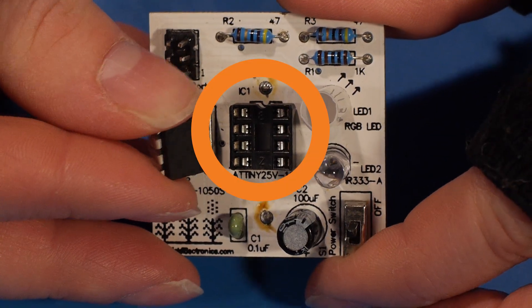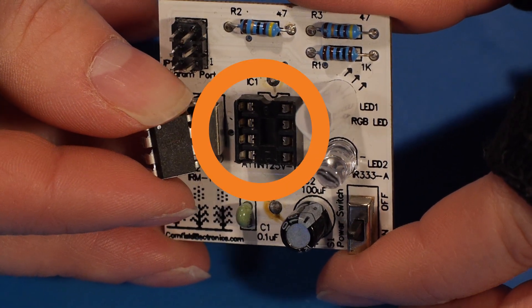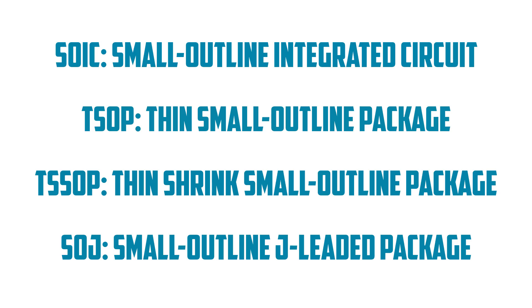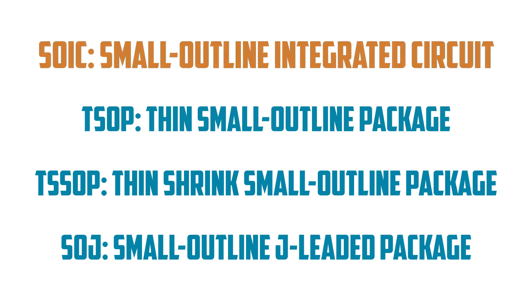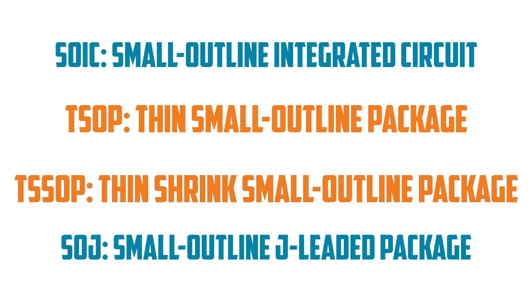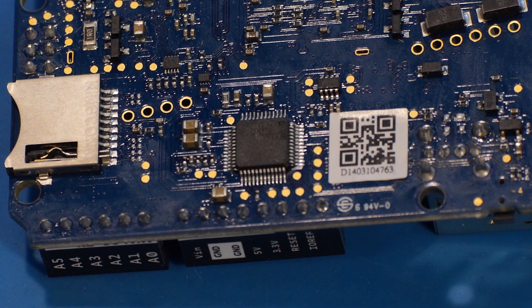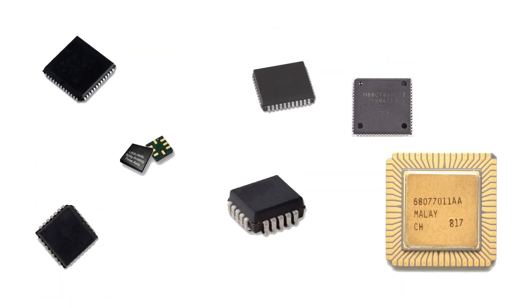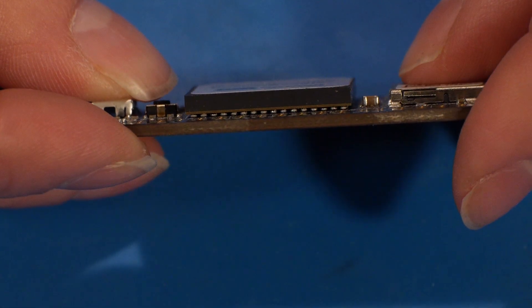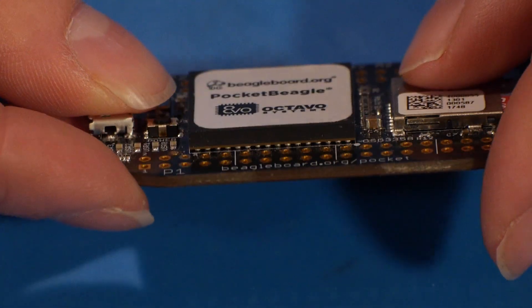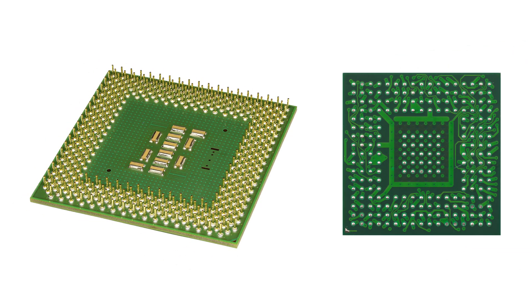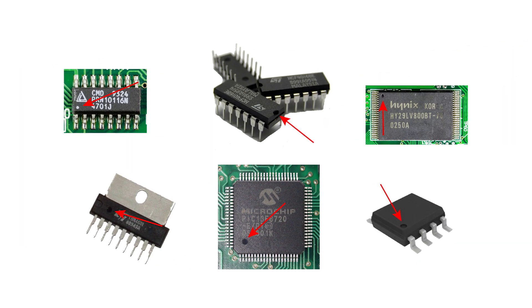DIPs often use sockets so that they may easily be replaced if damaged. Small-outline packages include varieties of surface-mount chips such as SOICs, TSOPs, and SOJs. For more complex ICs that require more input-output, or I/O, chip carriers have J-shaped pins or metal pads on all four sides of the package. And some integrated circuits require so many connections that they use grid arrays — pins for through-hole and balls for surface-mount.